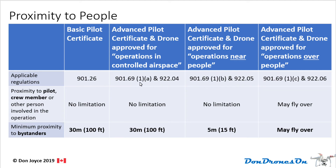Take a moment to study that chart. Rule 901.69 has three sub-parts — subsections A, B, and C — and they correspond to standard 922 regulations for the technical specifications of drones: 04, 05, and 06 respectively.